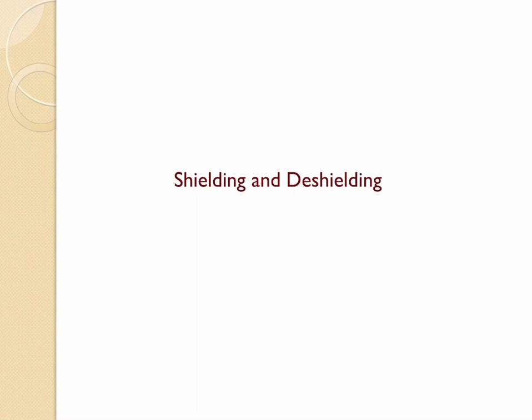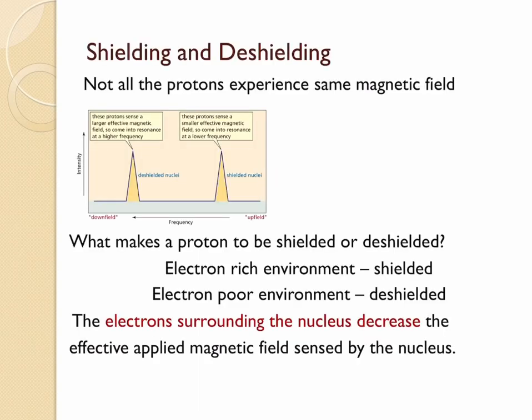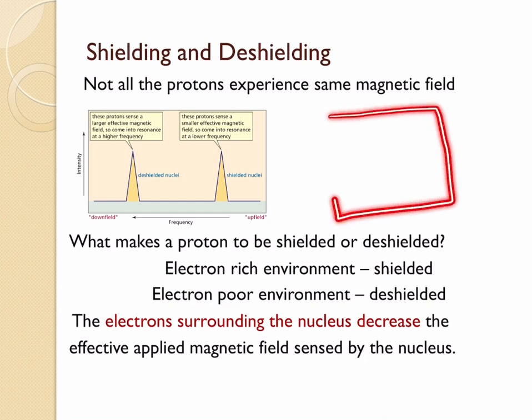Shielding and deshielding. We know that the frequency of the NMR signal is going to depend on the strength of the magnetic field that is experienced by the nucleus. Now in a compound, if all the protons experience the same amount of magnetic field, then all we will be getting in the NMR spectrum is one peak which is going to correspond to all the protons present in the compound. This is not going to give us any information about the structure of the compound.